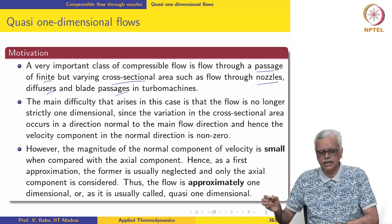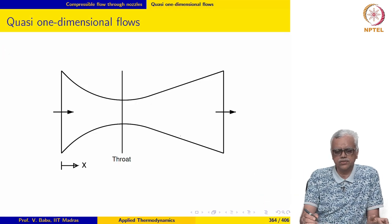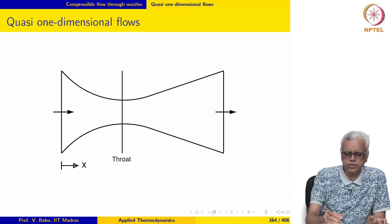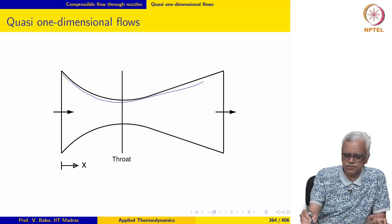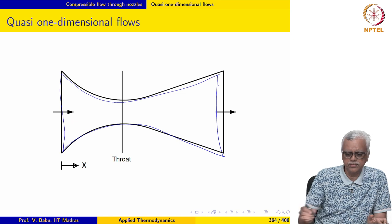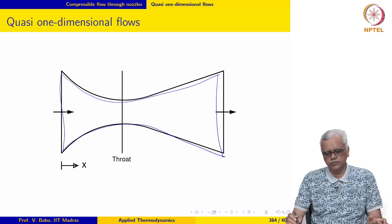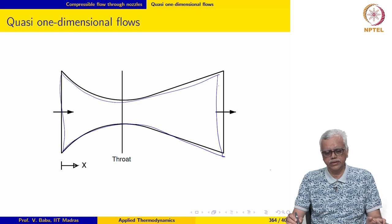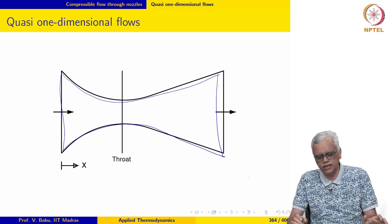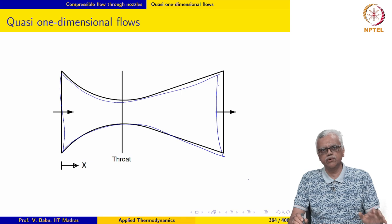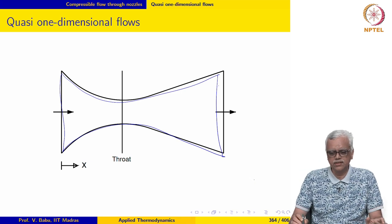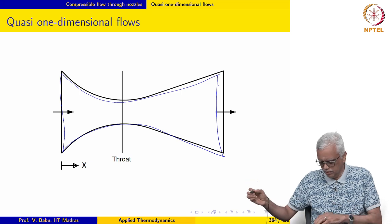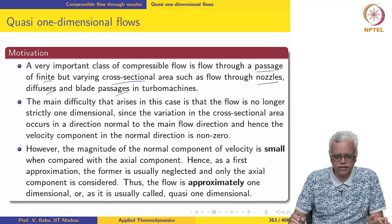Now, because we have a passage with a finite and varying cross-sectional area, the area of the stream tube is well known. For example, if you look at a nozzle, the stream tube from inlet to outlet would be defined by that geometry. So now we can easily imagine that the cross-sectional area has to appear in the governing equations, meaning there are likely to be modifications in the governing equations.